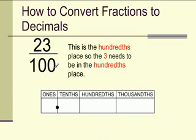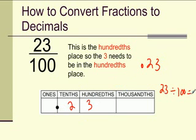Now, what if we have 23 over 100, and we need to make this a decimal? Well, 23 over 100 would just be .23. If you put it in your place value chart, .23. Or, you could do 23 divided by 100 equals on your calculator, and it would give you .23.